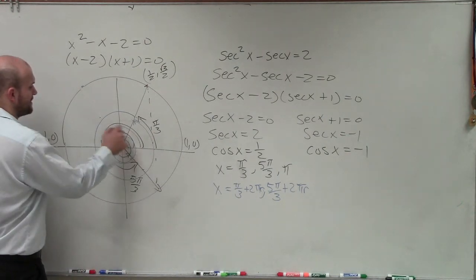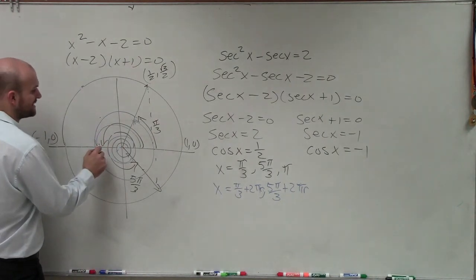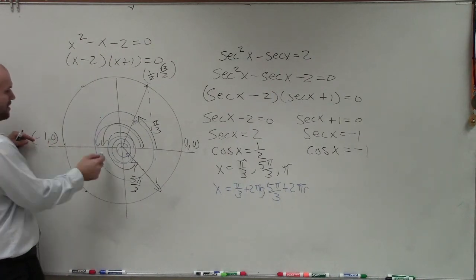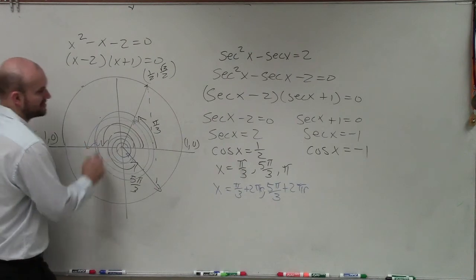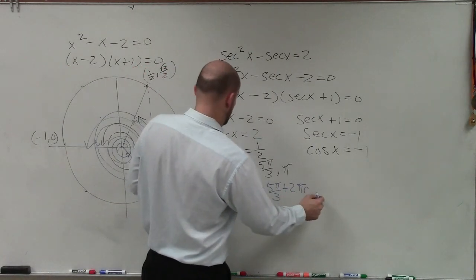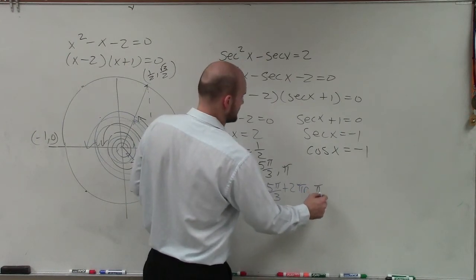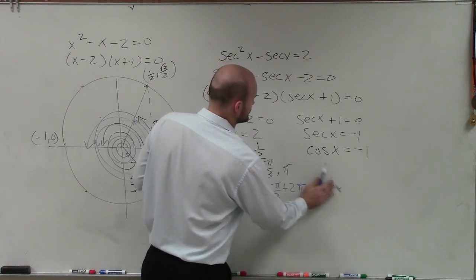And then lastly, we have my angle pi, which again, to get the next solution where my cosine of x equals negative 1, I have to again add 2 pi to it. So it would be pi plus 2 pi r.